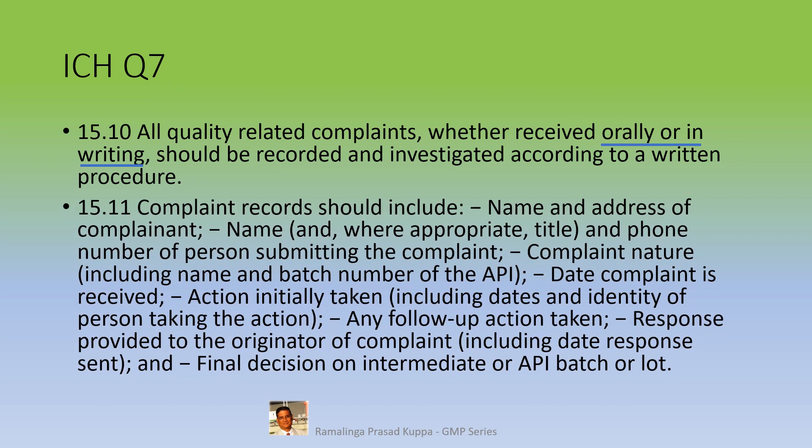Section 15.11 says complaint records should include: name and address of the complainant; name, and where appropriate title, and phone number of the person submitting the complaint; nature of the complaint including the name and batch number of the API; date the complaint is received; action initially taken including dates and identity of the person taking the action; any follow-up action taken; response provided to the originator of the complaint including the date the response was sent; and final decision on the intermediate or API batch or lot.